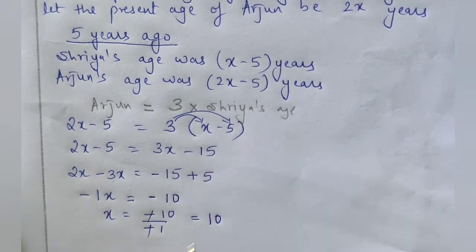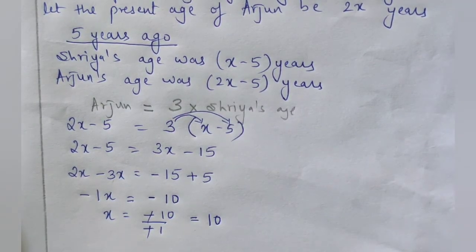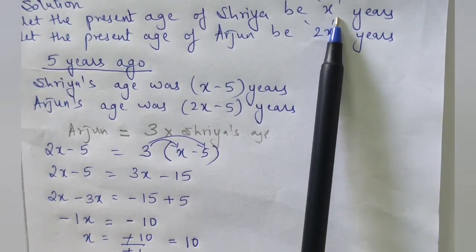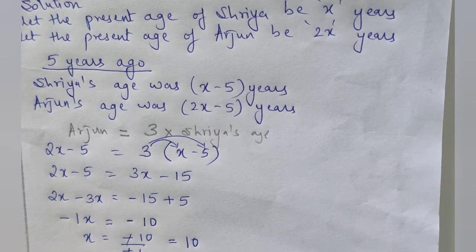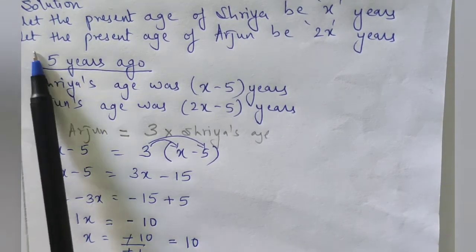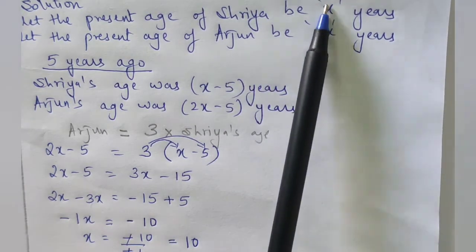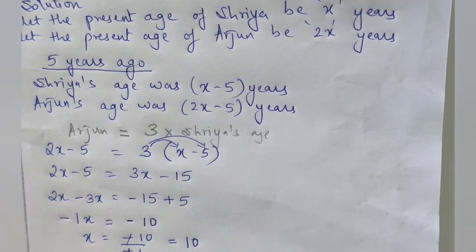The answer is x = 10. x is the present age of Shriya, so Shriya's present age is 10 years. The present age of Arjun is 2 times Shriya's age, so 10 × 2 = 20 years.